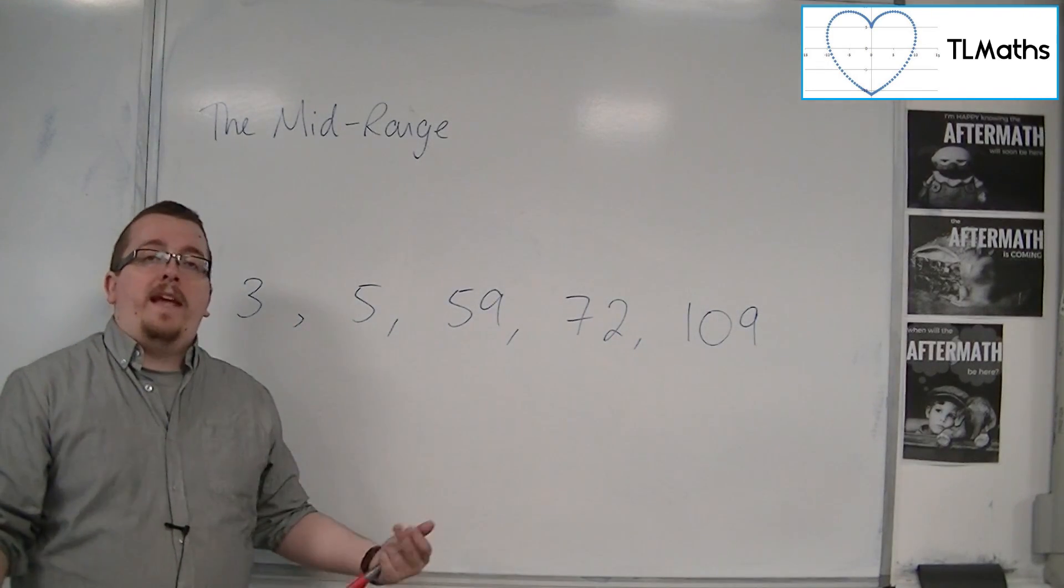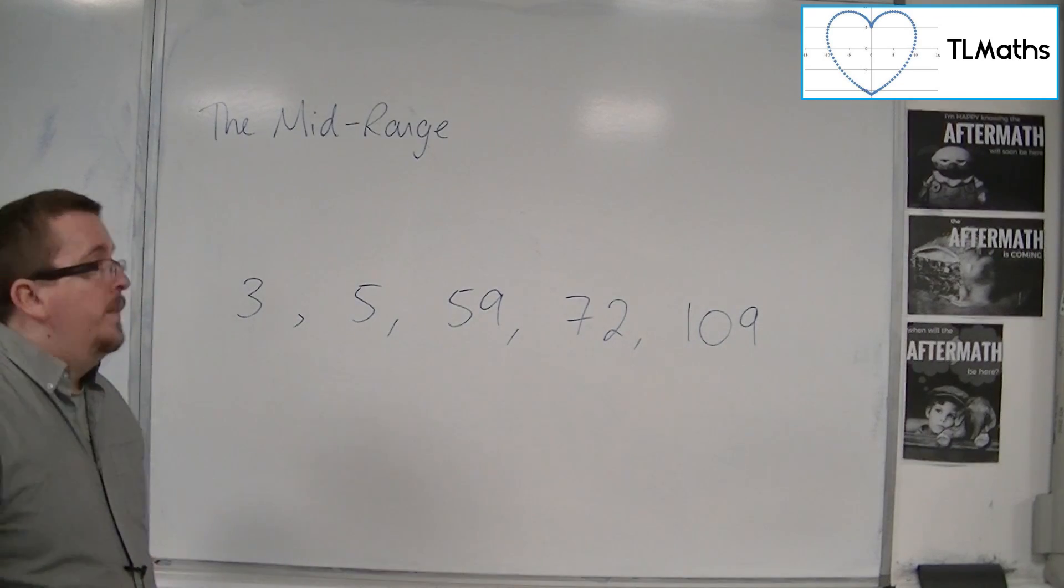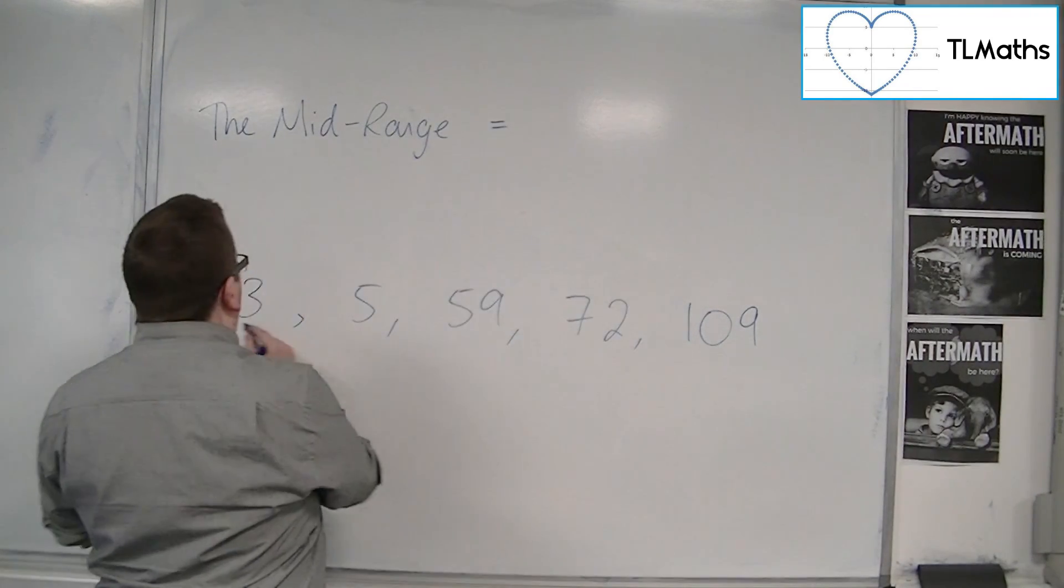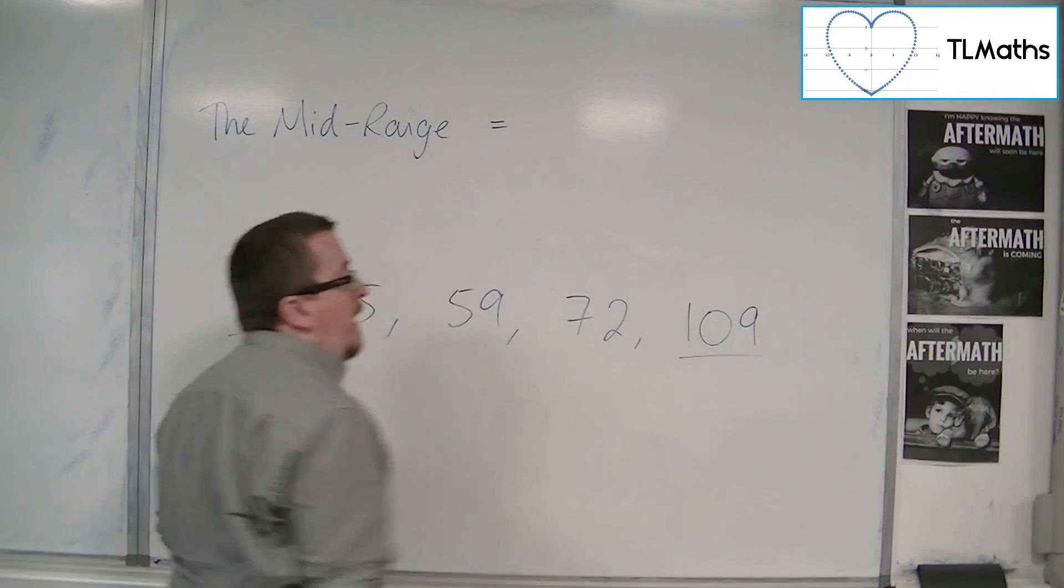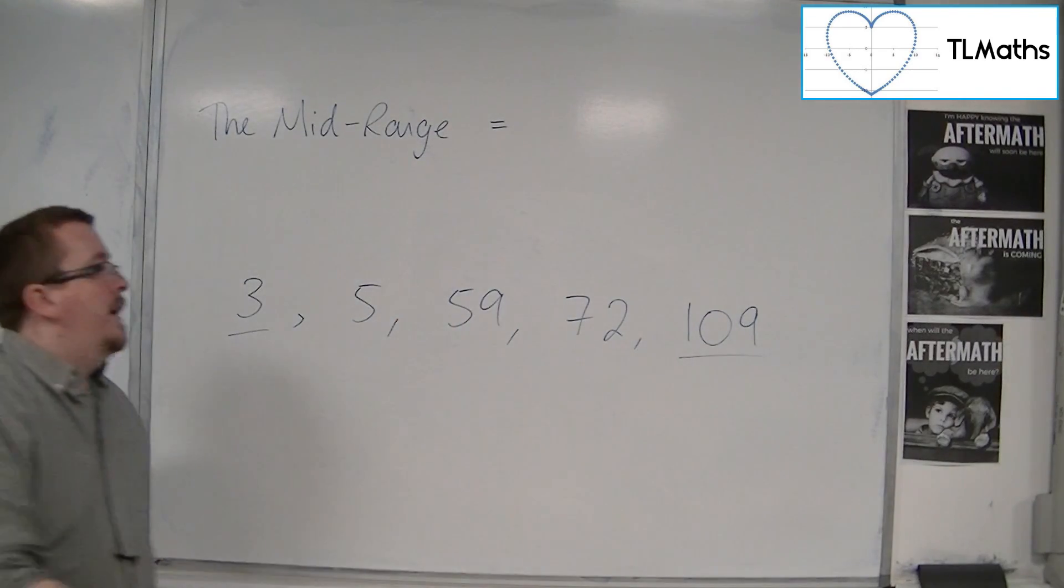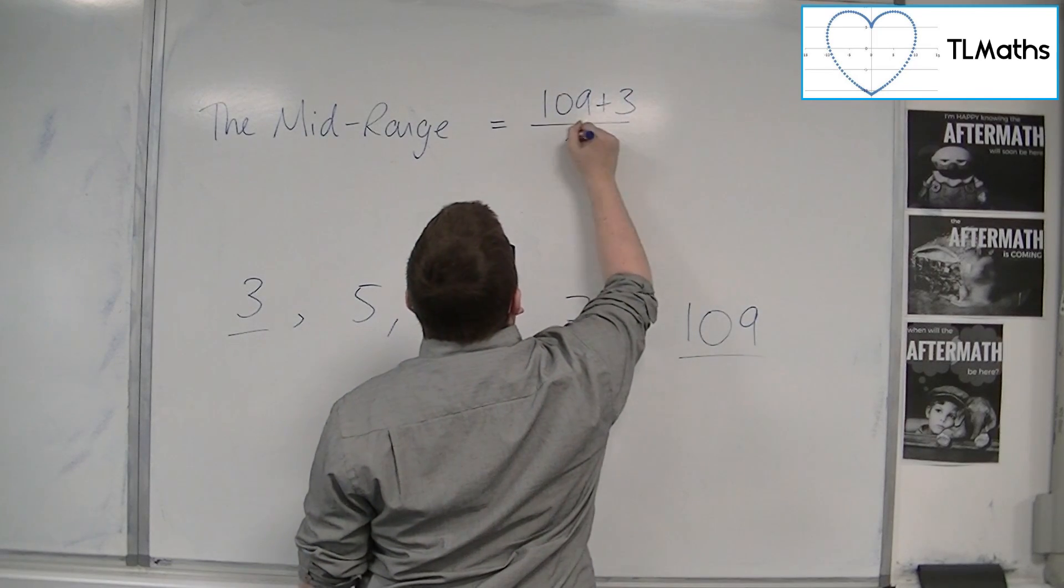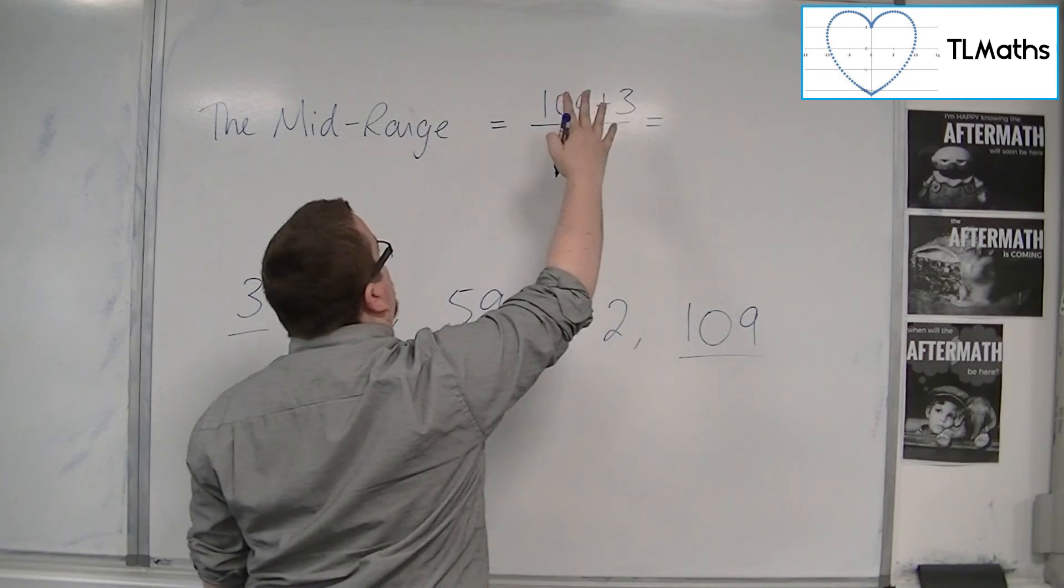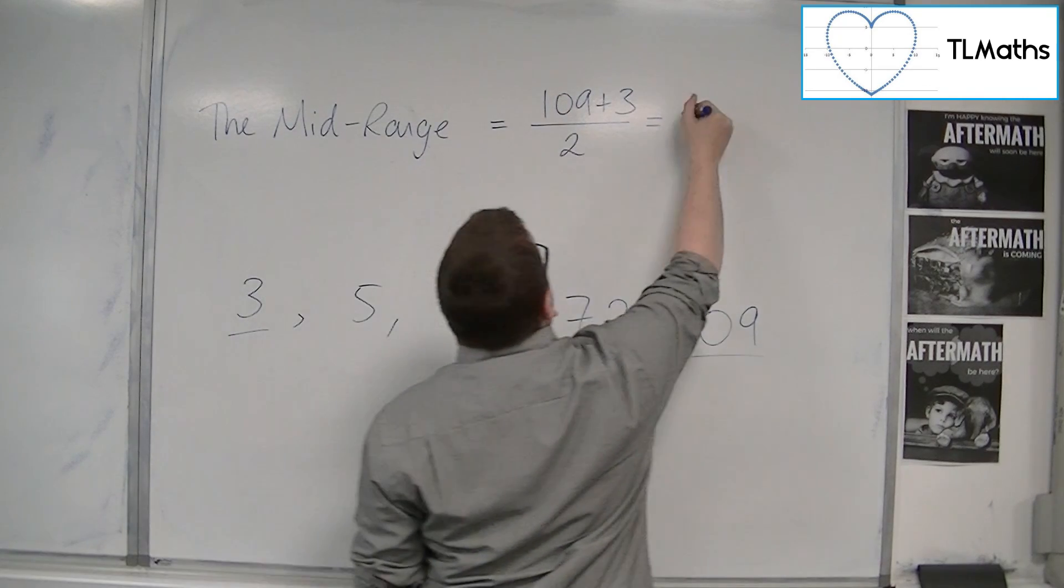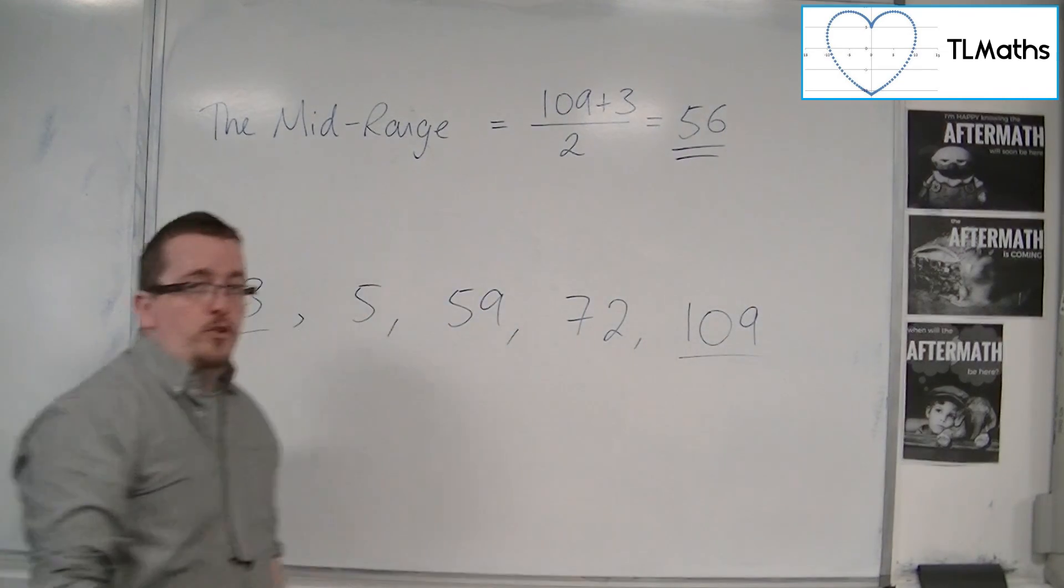then if you want to calculate the mid-range, the mid-range is the average of the 3 and the 109. So we add them together and divide by 2. So 112 divided by 2 is 56, and that would be your mid-range.